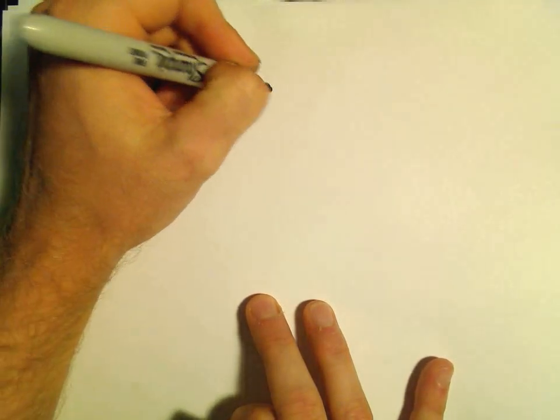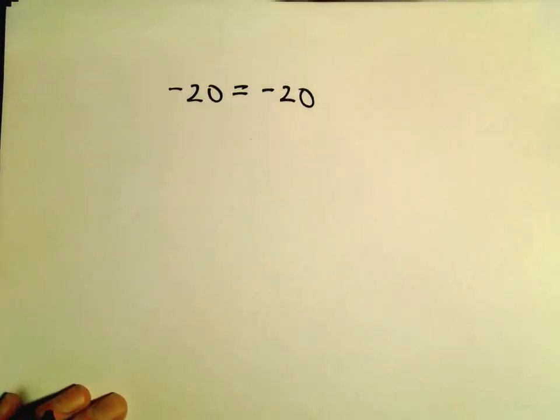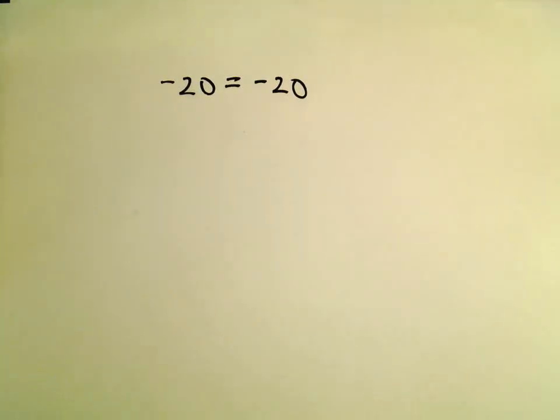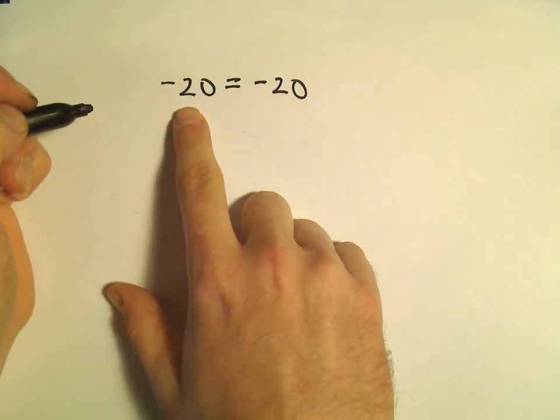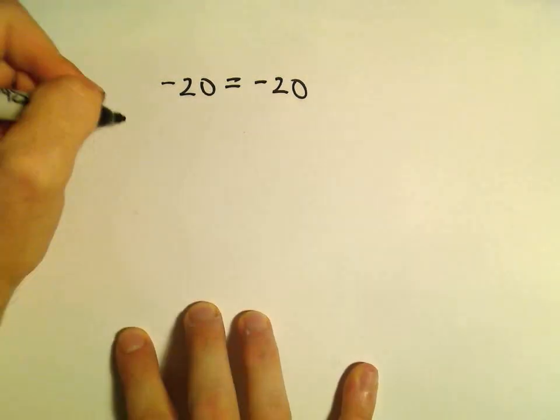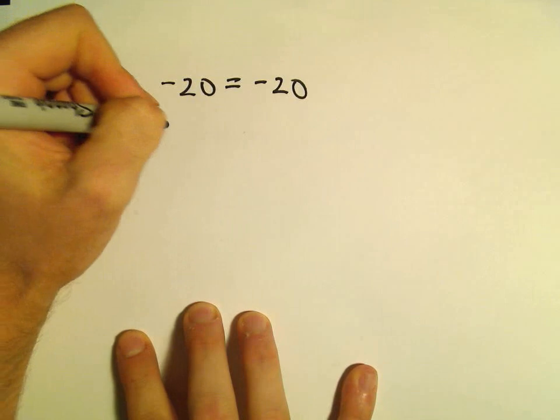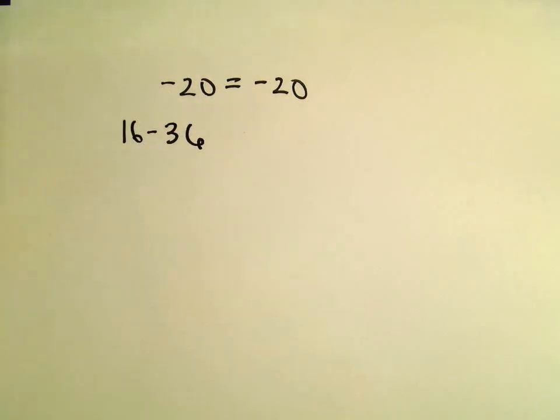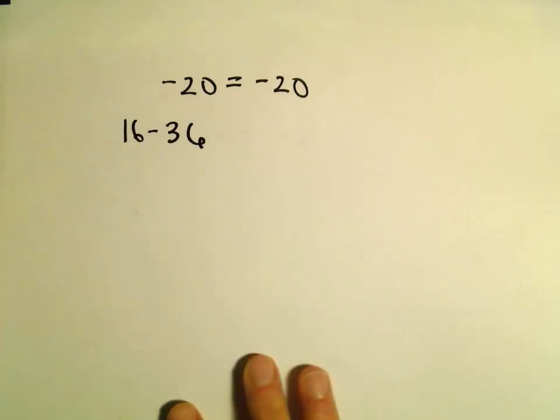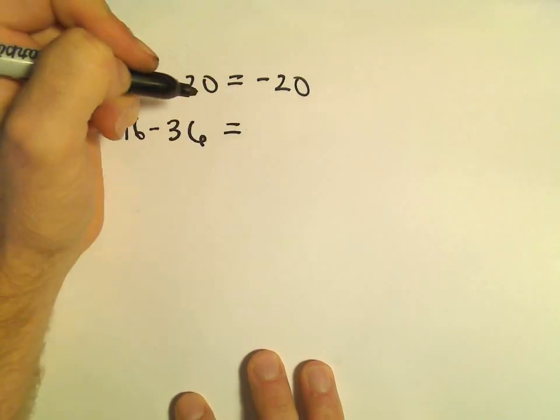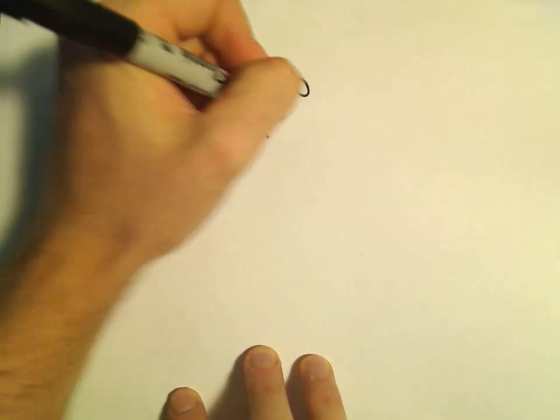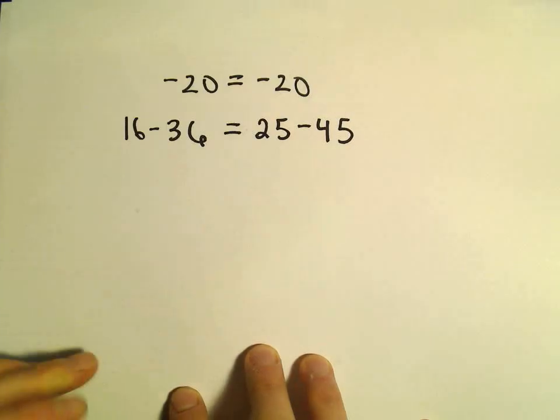So negative 20 certainly equals negative 20, no arguments there. Let's break up negative 20. I'm going to write that as 16 minus 36 on the left. You still get negative 20 there. On the right side, I'm going to write that as 25 minus 45.